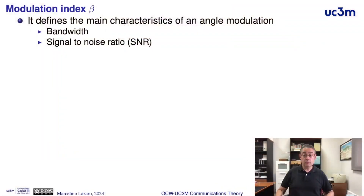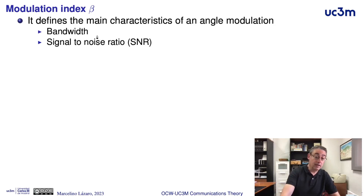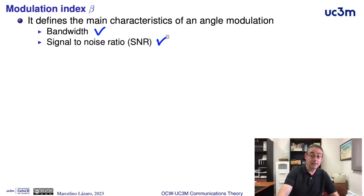The modulation index is a very important parameter for angle modulation — for phase or frequency modulation. This parameter is related to very important characteristics of angle modulation. In this video, we will introduce the definition of the modulation index and then analyze the effect of this parameter on the bandwidth of the angle modulation and on the signal-to-noise ratio of these modulations.